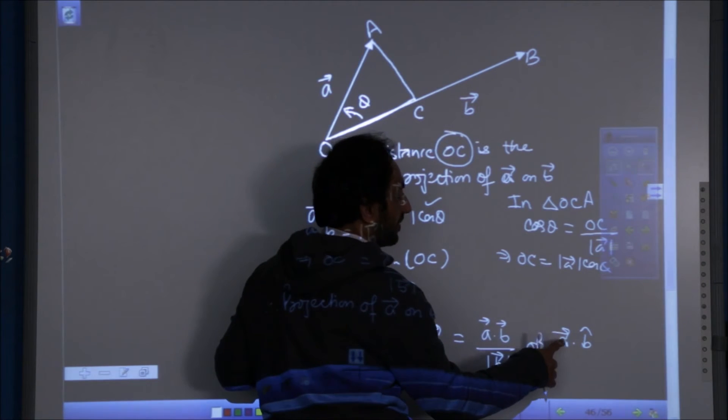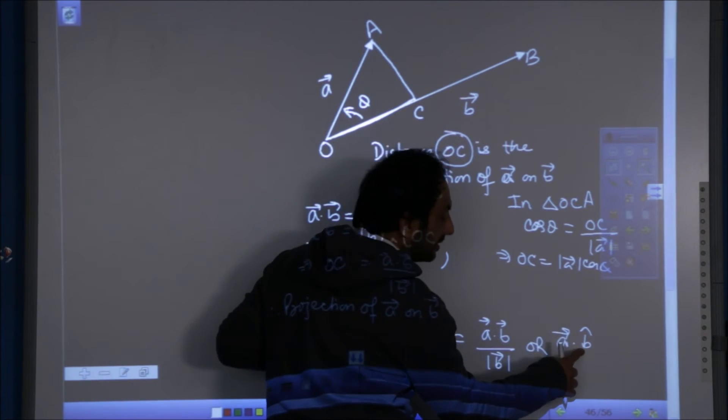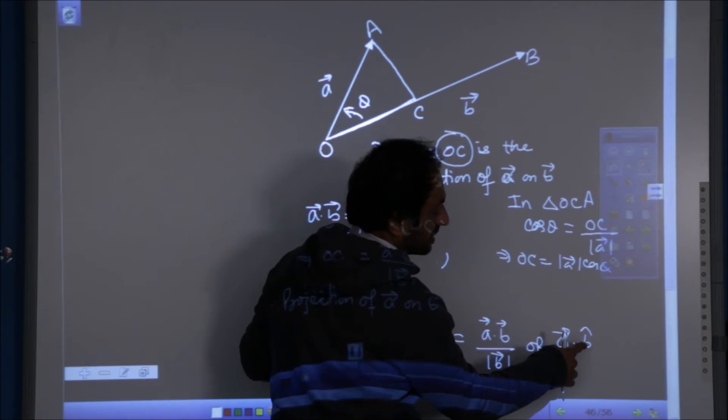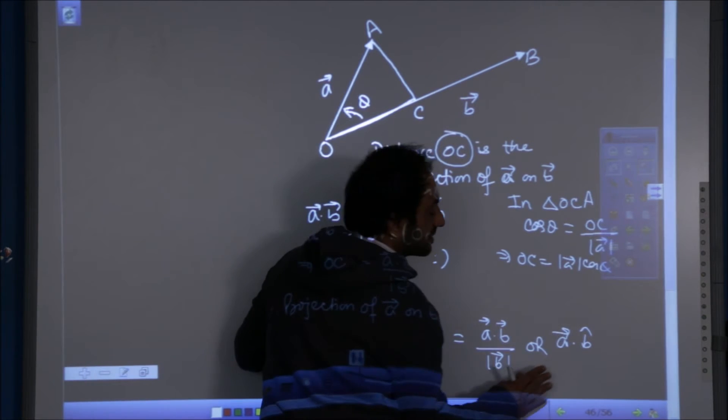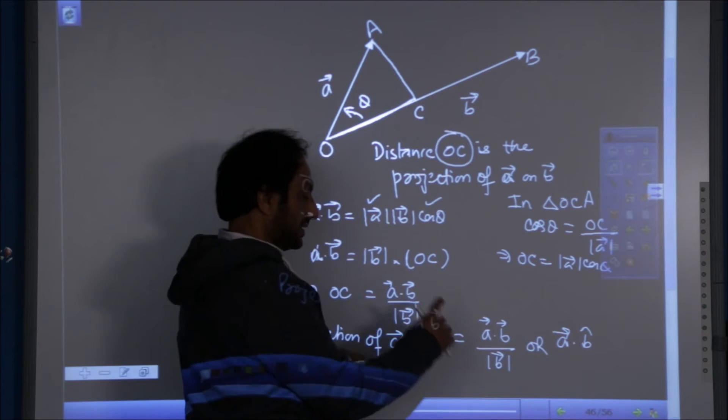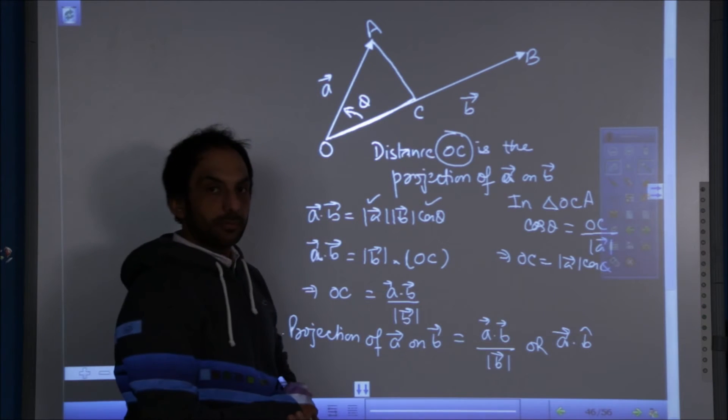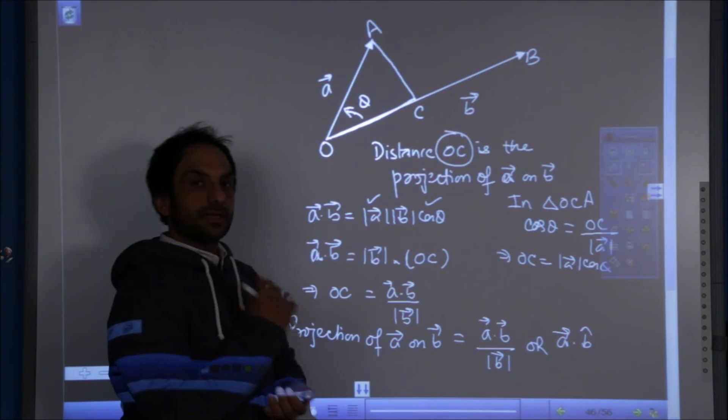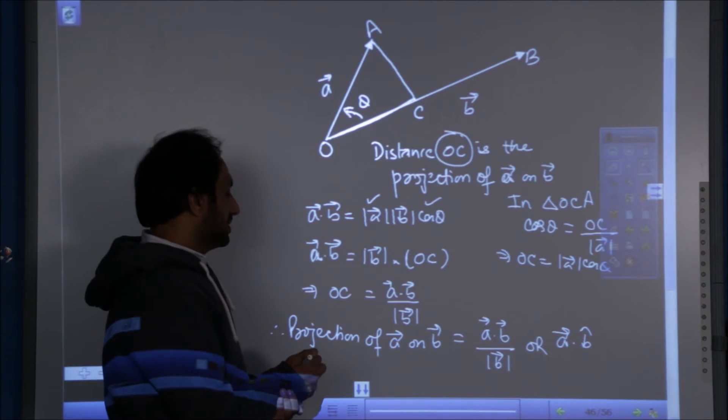So the dot product of A vector in the direction of B, because when it becomes a unit vector it becomes a direction. So either it is A dot B over mod B or A dot B cap.